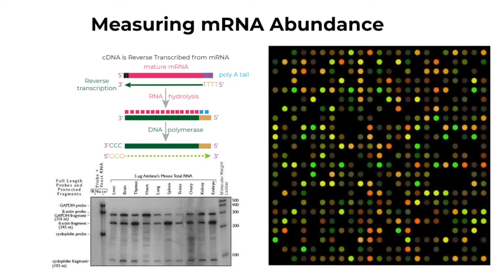Microarrays, like northern blots, are hybridization based. But in contrast to a northern blot, a microarray yields highly detailed information about the individual genes that have been transcribed. These signals are then detected, quantified, and used to create a digital image of the array. Finally, the digital image is used to identify the transcribed genes.